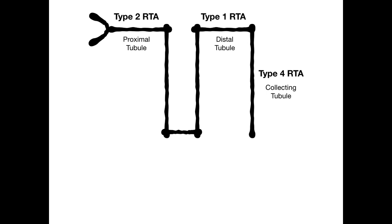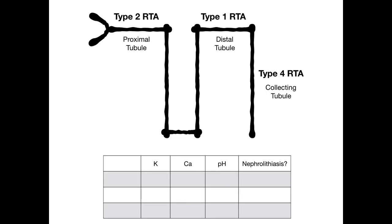So type 2 proximal, type 1 distal, type 4 collecting. The way I want to approach this is to fill in this table, because this is really all you need to know about renal tubular acidosis. There's a lot of information out there on the internet — don't be overwhelmed by it. If you can tell me for each of type 1, type 2, and type 4 what the potassium is doing, what the calcium is doing, what the pH is, and whether or not there's going to be a kidney stone, you're going to get 90% of your questions right.